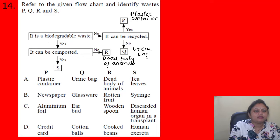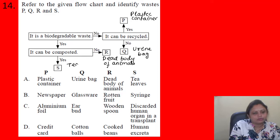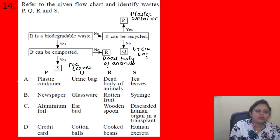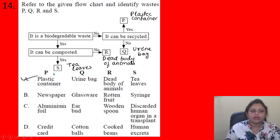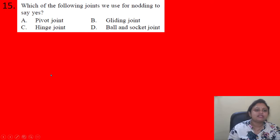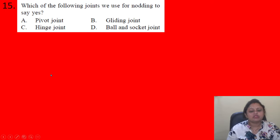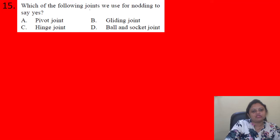S is biodegradable and compostable — could be tea leaves. So P: plastic container, Q: urine bag, R: dead body of animals, S: tea leaves. Option A is the correct answer.